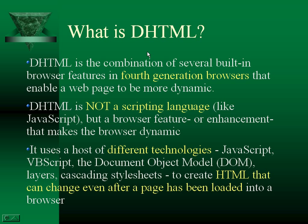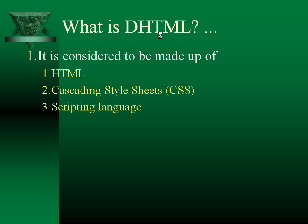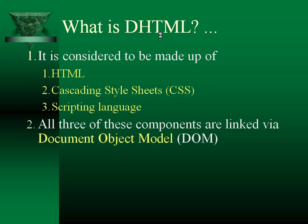It uses a host of different technologies — JavaScript, VBScript, the Document Object Model, layers, and Cascading Style Sheets — to create HTML that can change even after a page has been loaded into a browser. DHTML is considered to be made up of HTML, Cascading Style Sheets, and scripting languages. All these three components are linked by the Document Object Model, DOM.